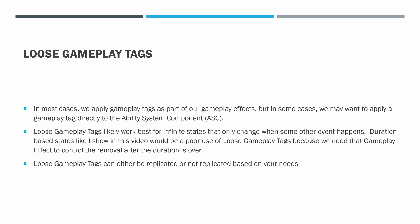In most cases we apply gameplay tags as part of our gameplay effects, but in some cases we may want to apply a gameplay tag directly to the ability system component. Loose gameplay tags likely work best for infinite states that only change when some other event happens. Duration-based states would be a poor use of loose gameplay tags because we need the gameplay effect to control the removal after the duration is over. The way I'm showing it in this video isn't ideal — I just wanted some kind of example to demonstrate loose gameplay tags, since it doesn't get talked about a lot.